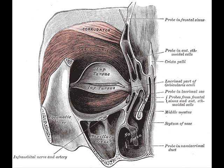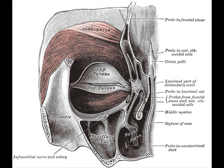In addition, the orbital and palpebral portions can work independent of each other, as in the furrowing of the brows while keeping the eyes open. Each time the eyelids are closed through the action of the orbicularis, the medial palpebral ligament is tightened. The wall of the lacrimal sac is thus drawn lateralward and forward, so that a vacuum is made in it and the tears are sucked along the lacrimal canals into it.